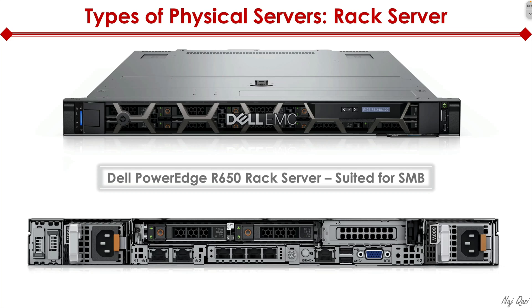Here's another type of server. As you can see, the difference is the previous server was vertical — this one is horizontal, a much slimmer version. At the front, very similar: we have a power button, a couple of USB ports, and a mini LED display that shows us our IP address, which is very handy. On the back side, we have power outlets, network interface ports, VGA, USBs, and all that. It's no different than the tower server — the only difference is the form factor.